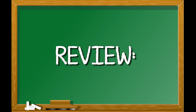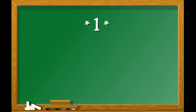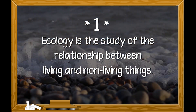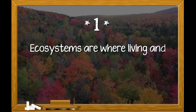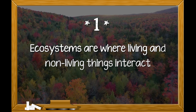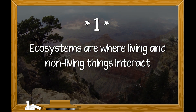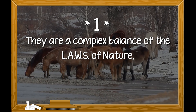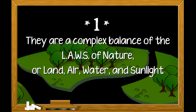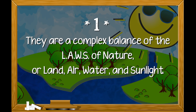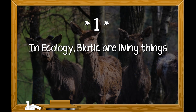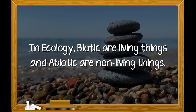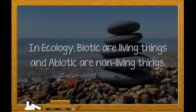So let's review what we've learned. First, ecology is the study of the relationship between living and non-living things. Ecosystems are where living and non-living things interact. They are a complex balance of the laws of nature — land, air, water, and sunlight. In ecology, biotic are living things and abiotic are non-living things.